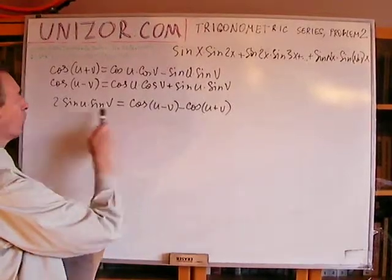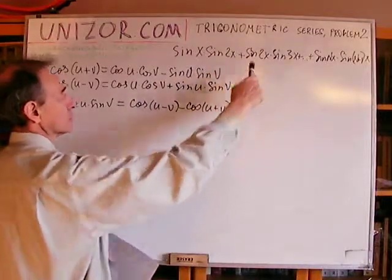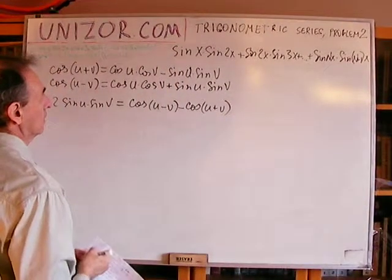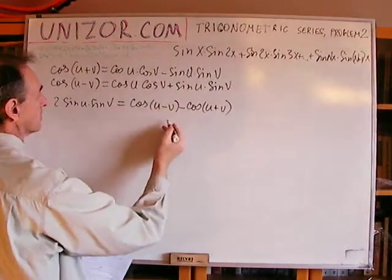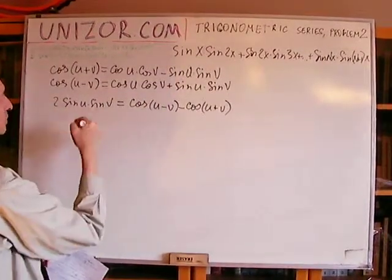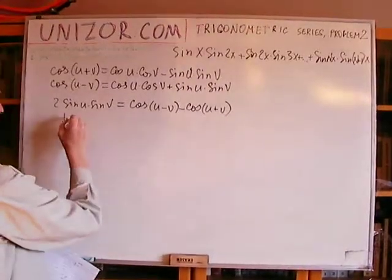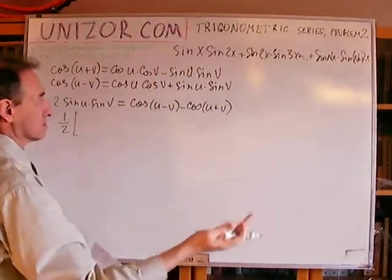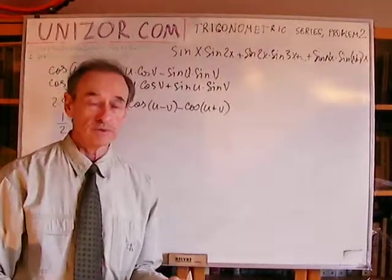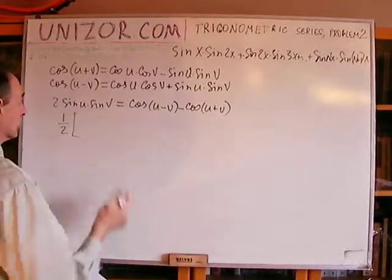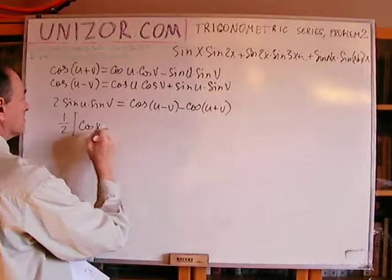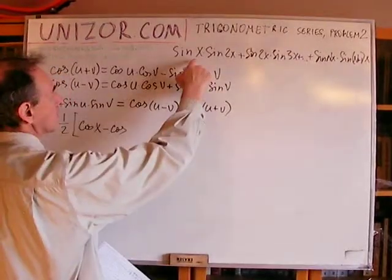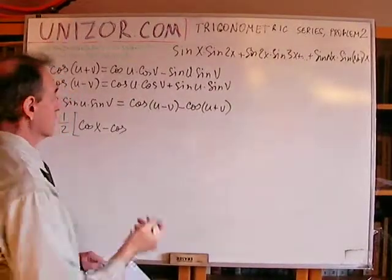If I use this formula for u=x, v=2x, then u=2x, v=3x, and so on up to u=nx, v=(n+1)x, then x is u and 2x is v, so I have ½. The difference u−v is −x, but cosine is an even function, so cosine of a negative angle equals cosine of the positive one. So the first term gives cos(x) − cos(3x). The next pair gives cos(x) − cos(5x), and so on.